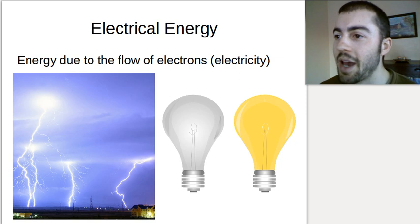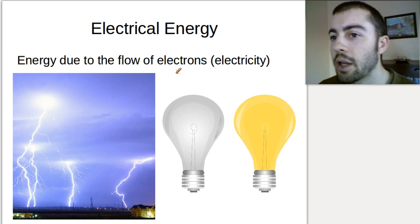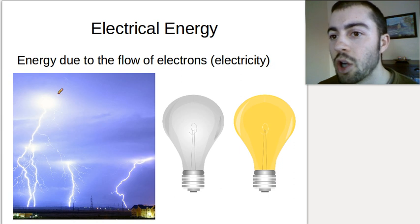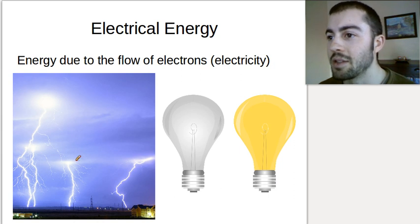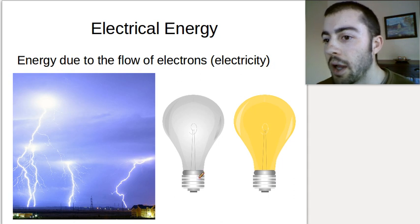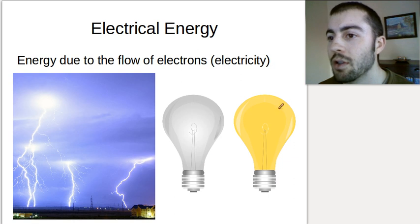Electrical energy is kind of straightforward. It comes from electricity, and electricity is the flow of electrons. When we have lightning, that's an example of electrical energy — a bunch of charge builds up in the sky and is discharged down toward Earth. Anything you plug into the wall is using electrical energy: a light bulb, your TV, your phone — anything you plug into the wall.